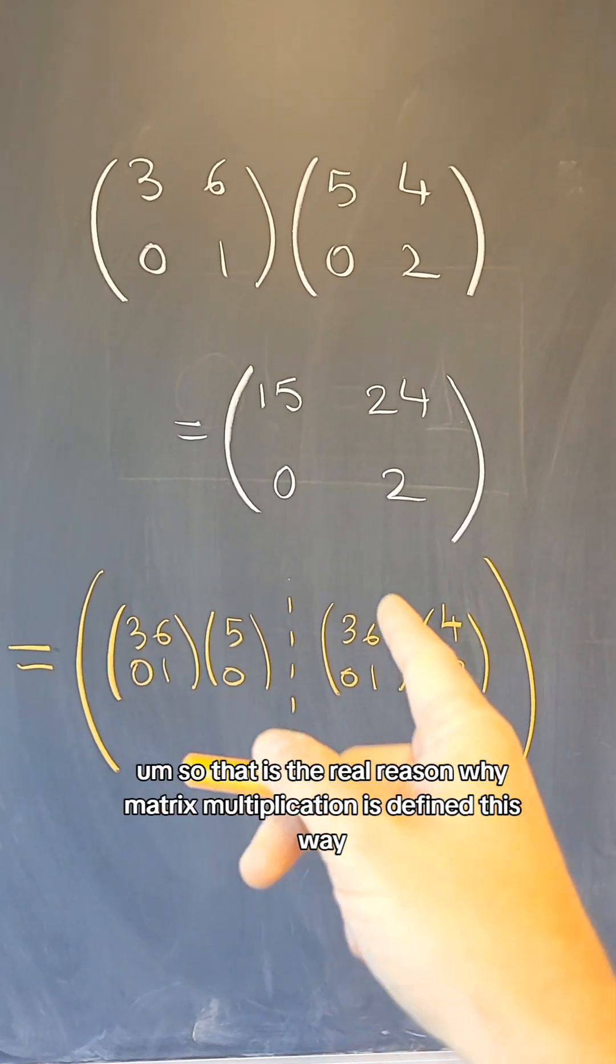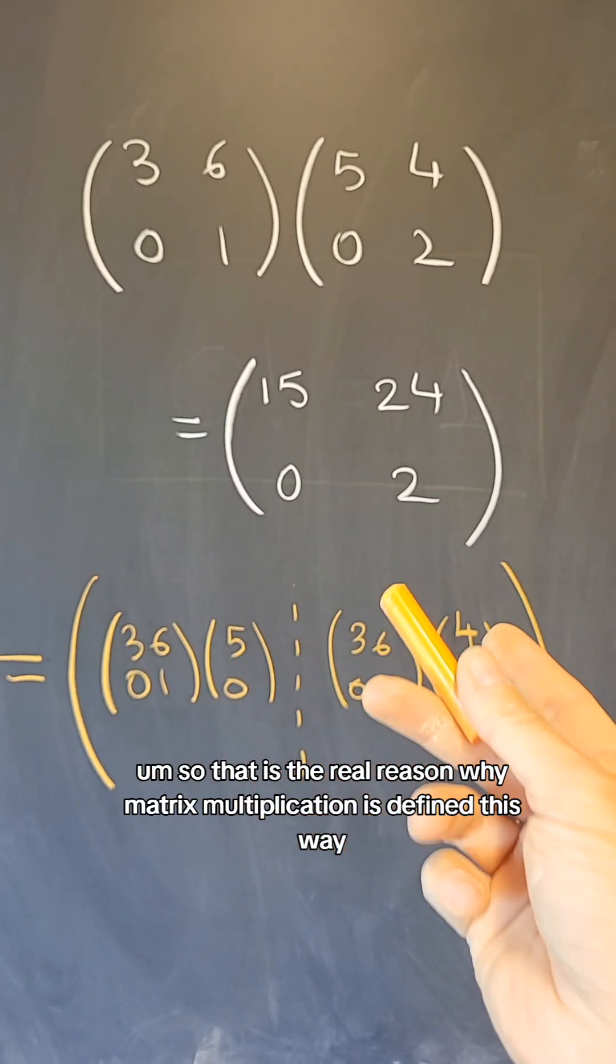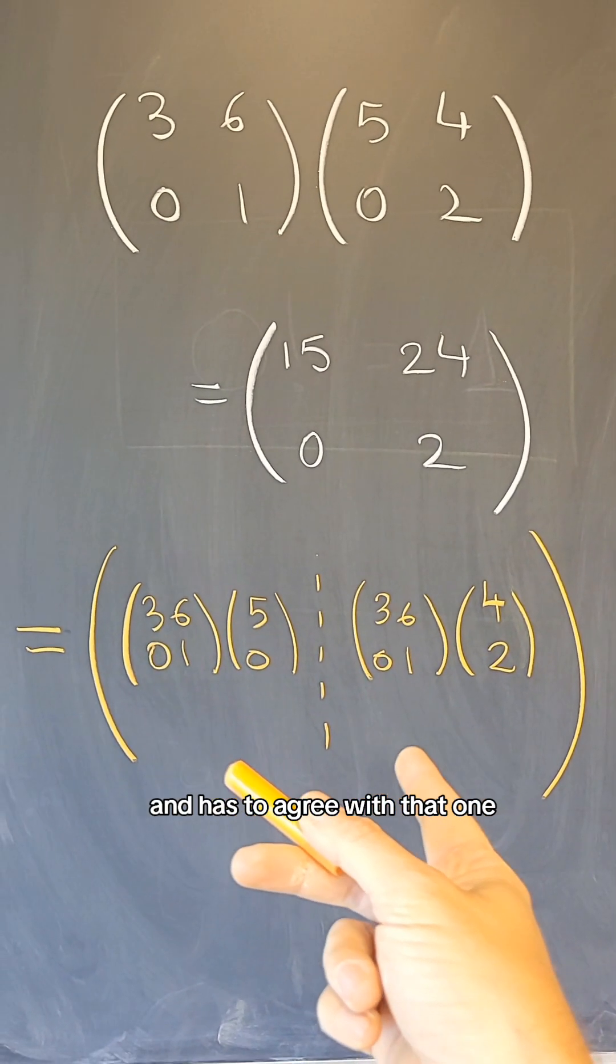So that is the real reason why matrix multiplication is defined this way, it has to agree with composition of linear maps.